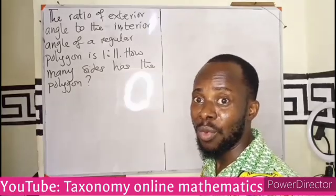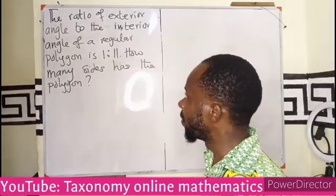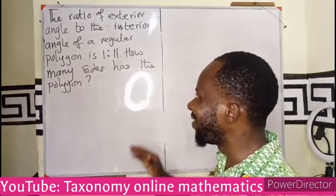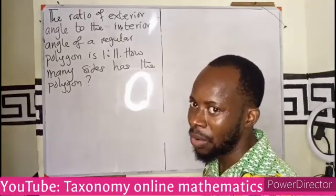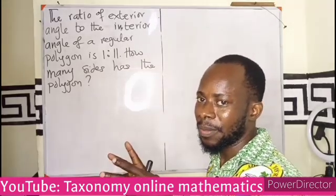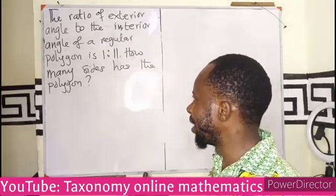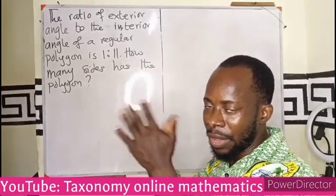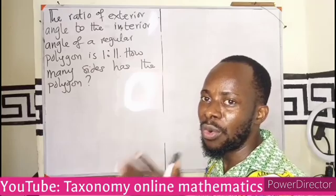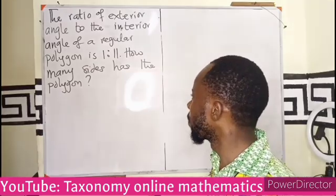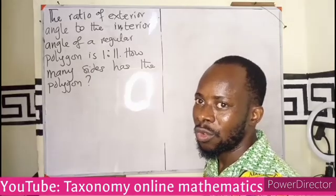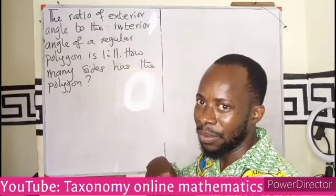Normally under polygons, we want to see a diagram. The ratio of the exterior angle to that of the interior angle of a regular polygon is 1 to 11 — meaning 1 for the ratio of the exterior, then 11 for the ratio of the interior. So how many sides has the polygon? We are looking for that N value.